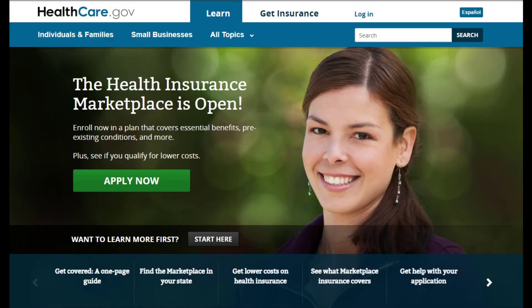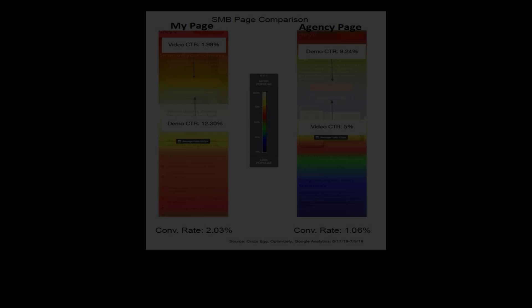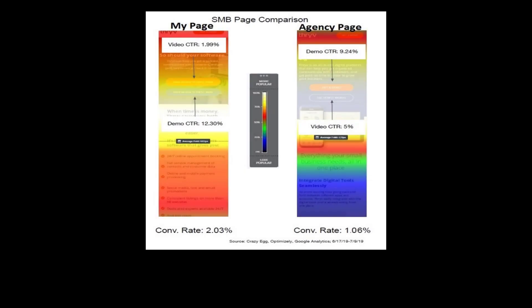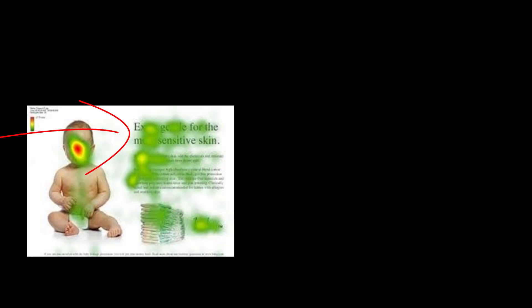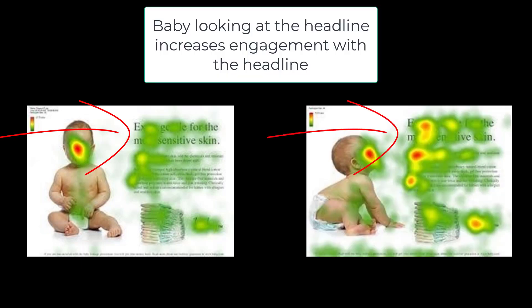Even the images you use will either help you grow your online customer base or repel them. We can see this with heat maps and how people look at your marketing material. Images can lead people to read more of your content or ignore it and bounce from your page. Common wisdom says to have a smiling woman look at your potential customer, but testing shows this pulls eyes away from the marketing message and lowers conversion rate. However, having that same model look at your headline or key marketing concepts actually increases conversions.